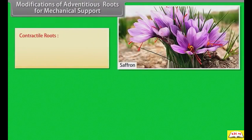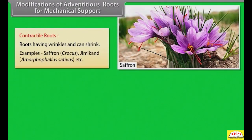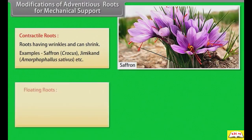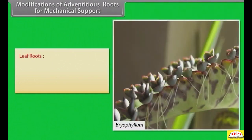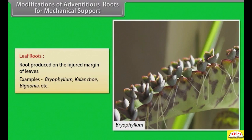Contractile roots have wrinkles and can shrink. Examples: saffron, Jimikand, etc. Floating roots are thick, spongy, fleshy roots with air-filled chambers arising from nodes of the stem. Example: Jussiaea repens. Leaf roots are roots produced on the injured margin of leaves. Examples: Bryophyllum, Bignonia, etc.